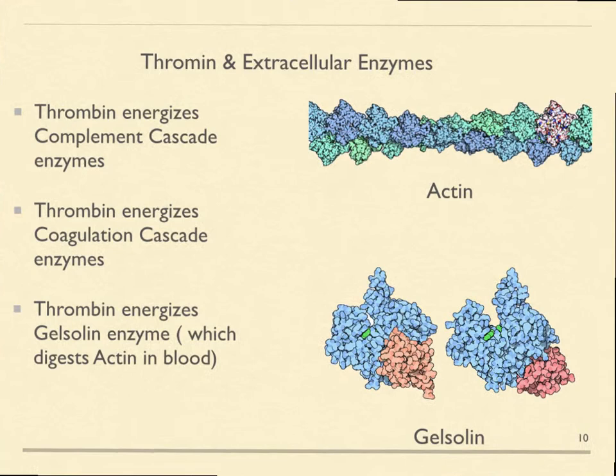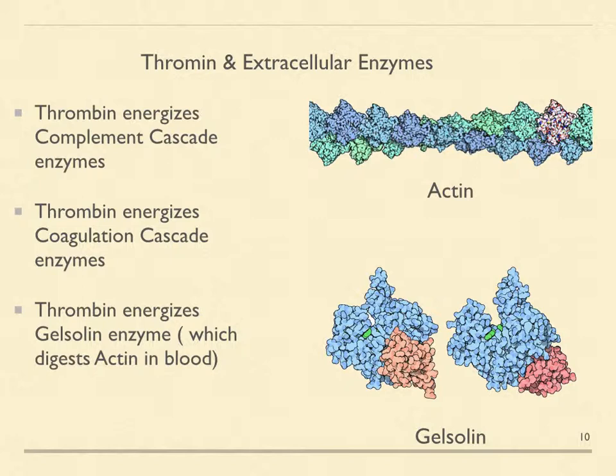Thrombin, ATP, and calcium are essential for extracellular enzyme activities including the complement cascade, the coagulation cascade, and gelsolin, which digests actin. This prevents actin from becoming entangled with insoluble fibrin and disrupting clot formation.